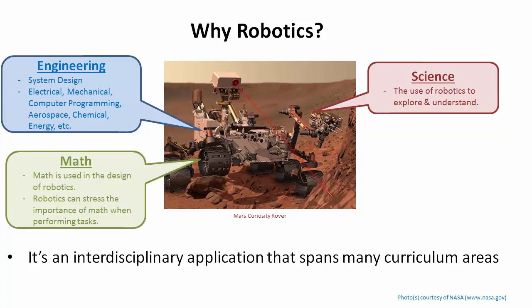We also have math. Math is obviously used in the design of robotics and is used widely in engineering to perform the design and analysis of robotic systems. But robotics can also stress the importance of math when performing tasks. Simple operations such as how many times will the wheel spin to make the robot move forward 12 inches, or how many degrees does it need to turn with a particular radius to face north — there are a lot of applications that make math a bit more fun than working with pen and paper.